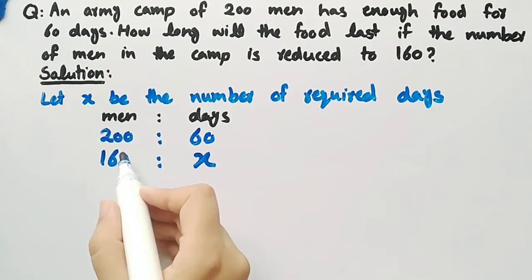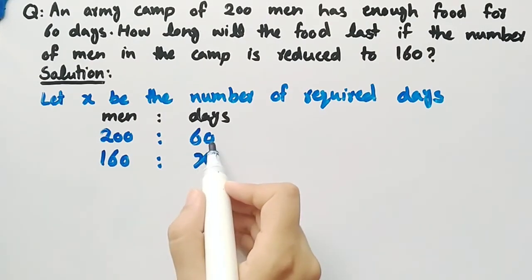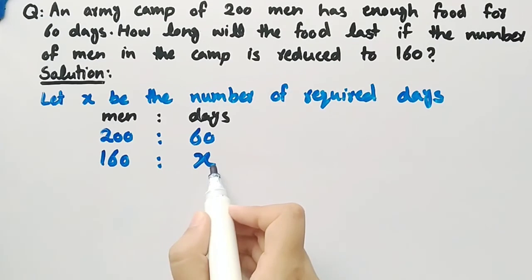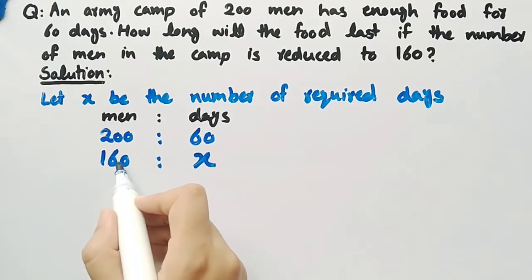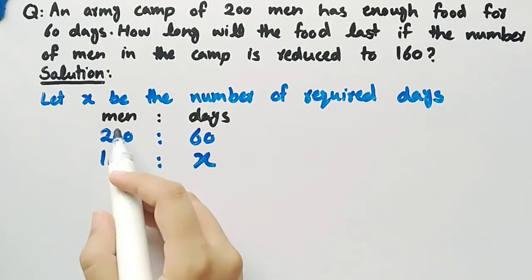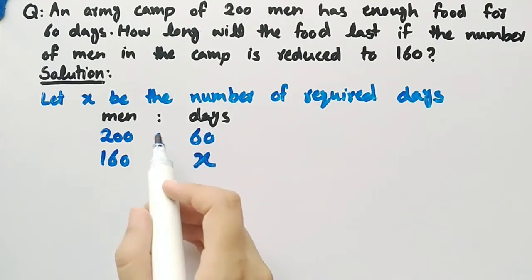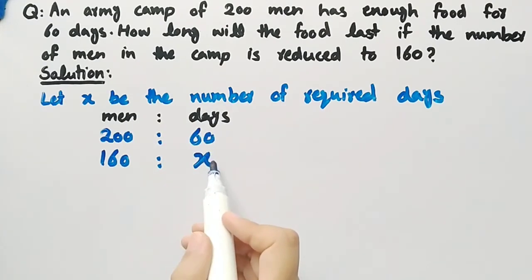If 200 men take 60 days to finish the food, then 160 men will take more days since the number of men is decreased. From here we can see that the quantities men and days are inversely proportional, since when the number of men is decreasing, the number of days is increasing.